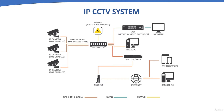In an IP CCTV system, cameras are of high video quality — 1 megapixel, 2 megapixel, 5 megapixel, or even higher. IP CCTV cameras capture video signals in high quality and then compress the data on board, which helps in reducing the bandwidth of transmitted data. This compressed data is then transmitted over a CAT5 cable to the Network Video Recorder via a switch.